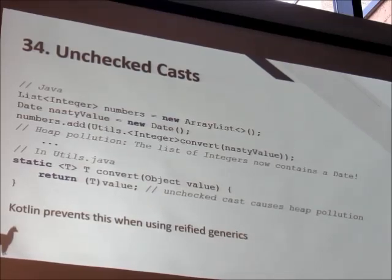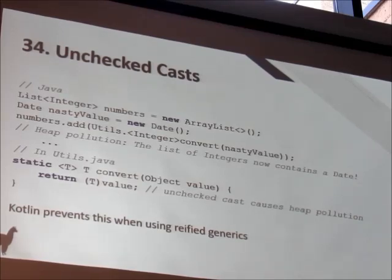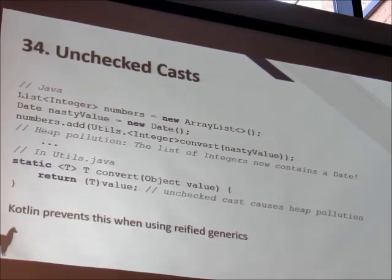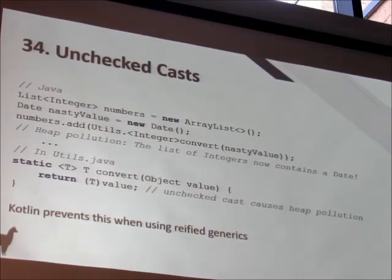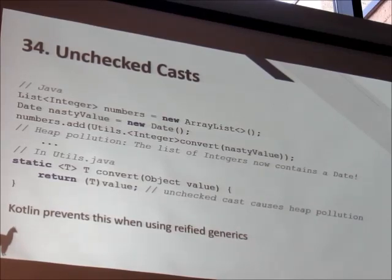Kotlin also compiles to JVM bytecode, so it has the same type erasure information loss. However, Kotlin has a new capability to eliminate this problem. You can define a function as inline with T being reified, meaning the type information is not erased — it's kept. The function is inlined into the call site wherever it's used. When we use it and say 'convert as Integer,' the compiler knows all the type information. So at runtime, rather than just treating it as an integer wrapper and adding it to the numbers list, it actually throws a ClassCastException right there — catching the defect much sooner.